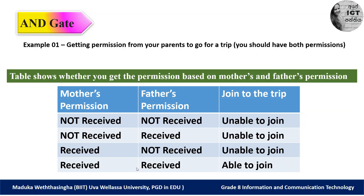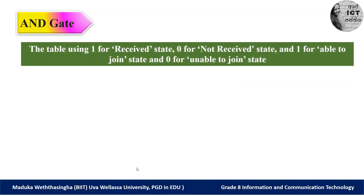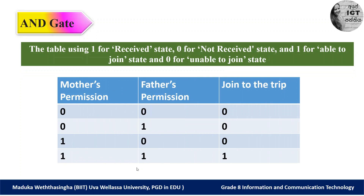Now let's redevelop this table using ones and zeros, because these gates are related to circuits which work with electrical voltage, and computers can only identify ones and zeros. We use one for 'receive' and zero for 'not receive'; one for 'able to join' and zero for 'unable to join.' In the first situation: no mother's permission and no father's permission — both zero — so you can't join, output zero.